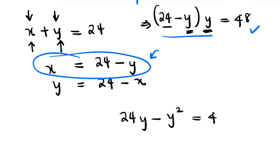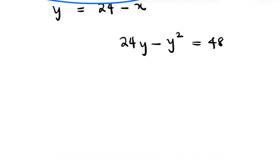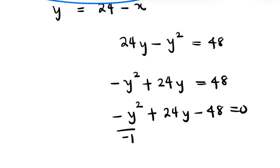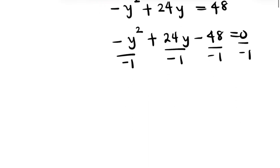Rearranging the left-hand side, we have negative y squared plus 24y equals 48. Bringing 48 to the left-hand side gives negative y squared plus 24y minus 48 equals zero. Dividing through by negative one gives y squared minus 24y plus 48 equals zero. We want the coefficient of y squared to be positive because this leads to a quadratic equation.